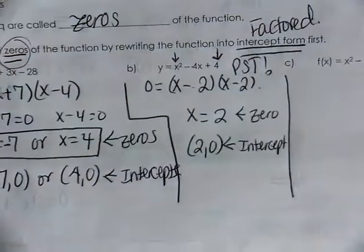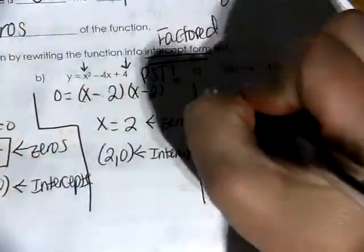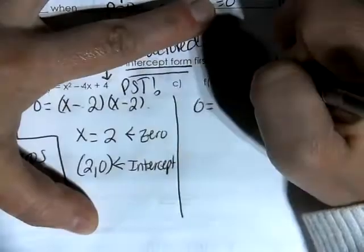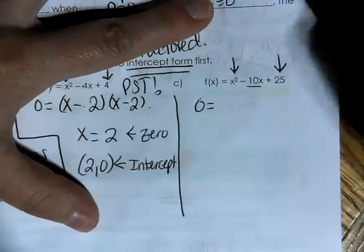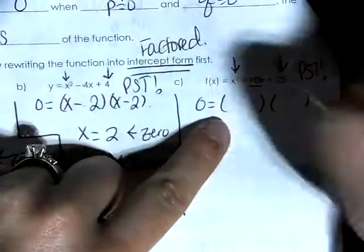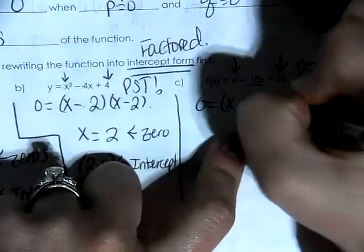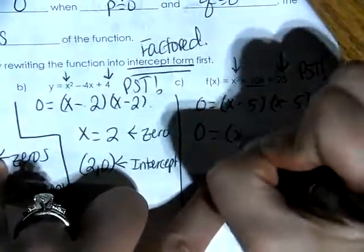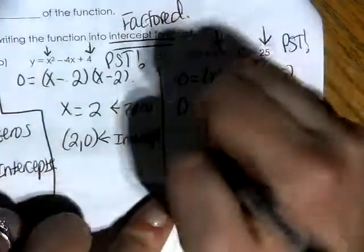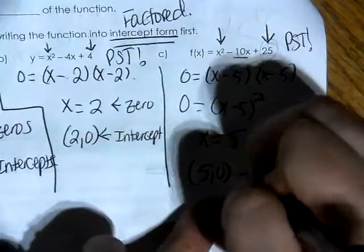Knowing the difference between a zero and an intercept is really important. For letter C, f of x equals x squared minus 10x plus 25 — I replace f of x with 0. My first term is a perfect square, my last term is a perfect square, my middle term is even — this is again a PST. I split x squared into x and x, the square root of 25 is 5, and my middle term is minus. You can write this as x minus 5 squared. Our answer is x equals 5. This is a zero, and the x-intercept is 5 comma 0.